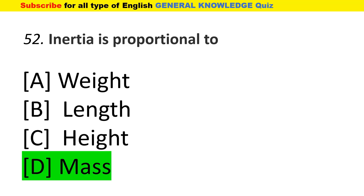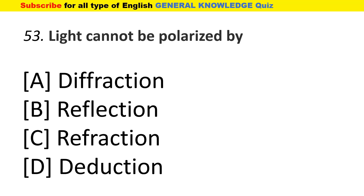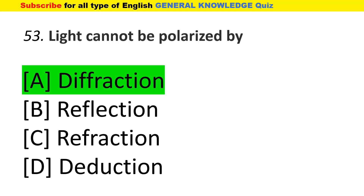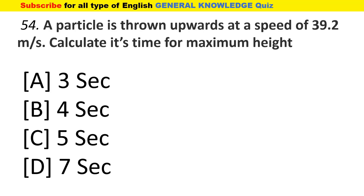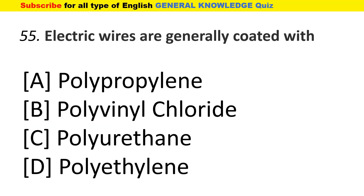Light cannot be polarized by diffraction. A particle is thrown upwards at a speed of 39.2 m/s — the time for maximum height is 4 seconds. Electric wires are generally coated with polyvinyl chloride.